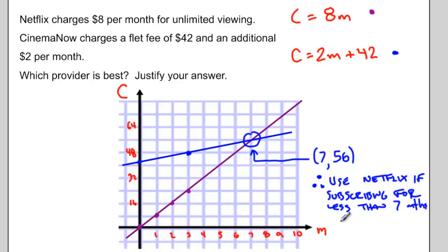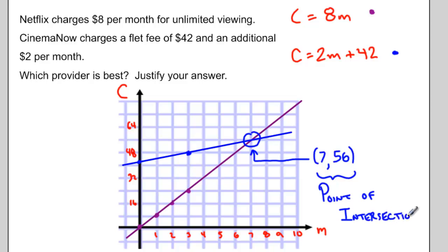And we would want to use CinemaNow for more than seven months. This point where the two graphs are crossing has a special name. It's called the Point of Intersection, or the POI.